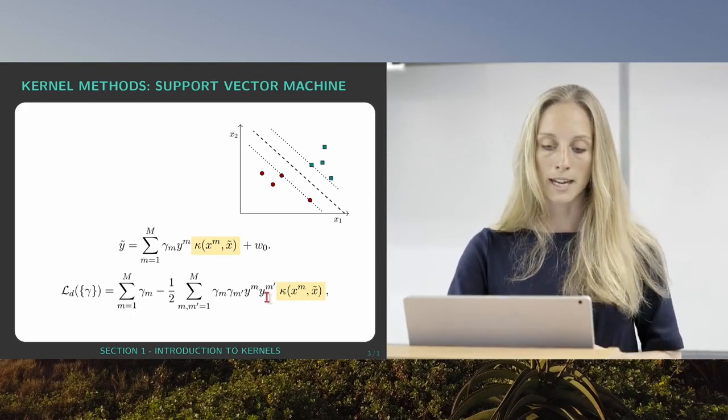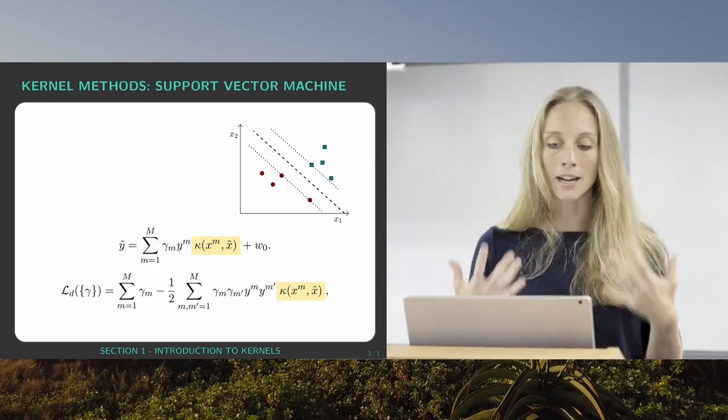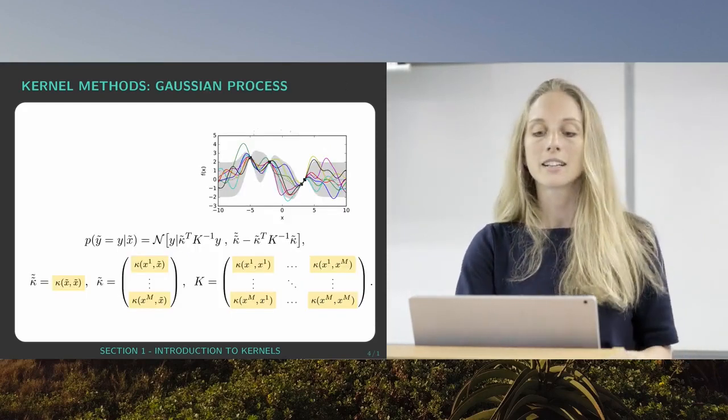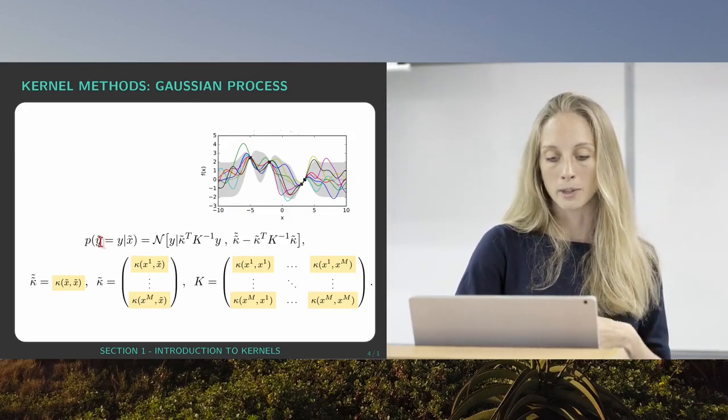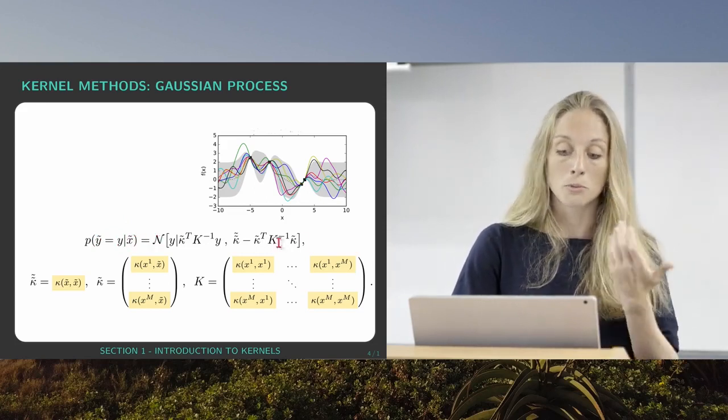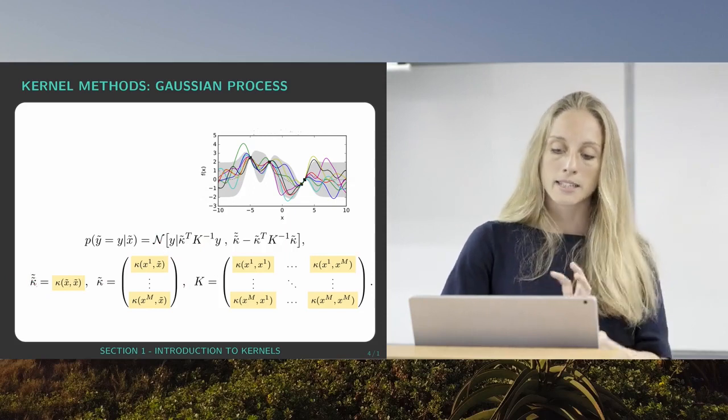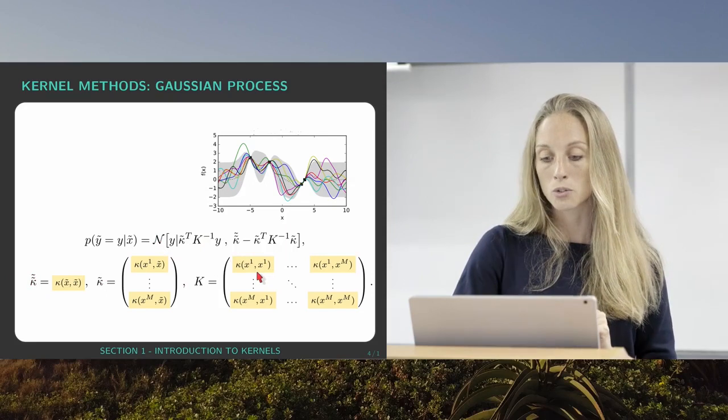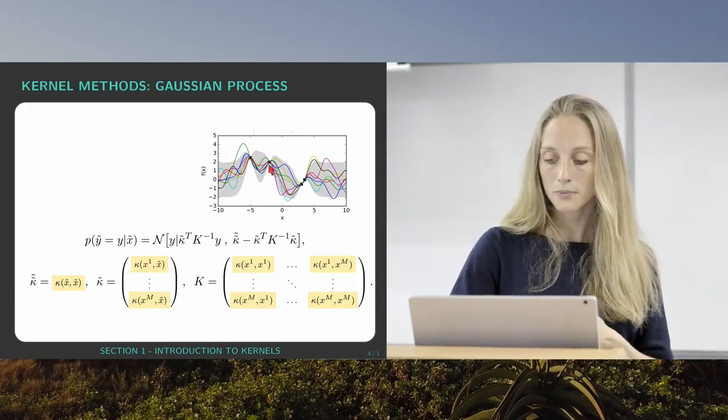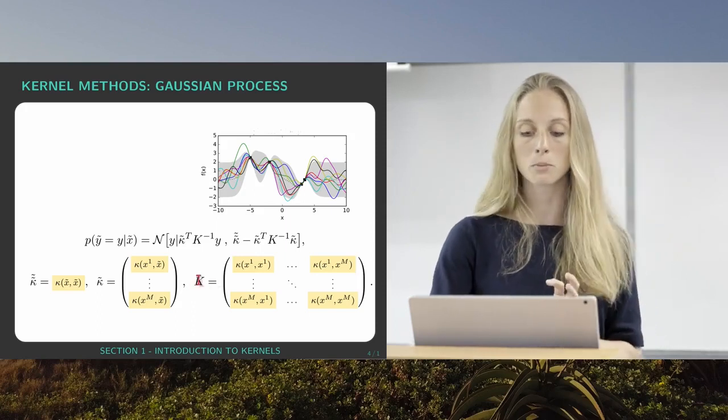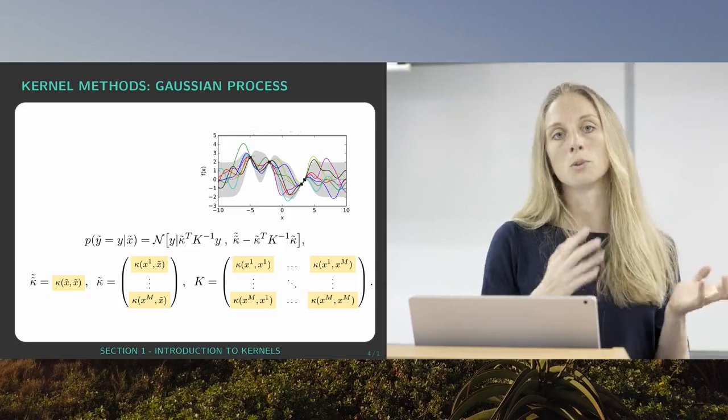Secondly Gaussian processes, again without going into the details, decide on a prediction y tilde or a certain class y given an input x tilde. And in this normal distribution we find a lot of tensors, so these are matrices and vectors and this is a scalar. And in these tensors are actually kernels, so pairwise similarity measures. And this kernel, which kernel you chose, has a very important influence on which functions are sampled in a Gaussian process. So how smooth the functions are. And this matrix K is actually a little bit interesting because we will talk about it later a bit more. It is a gram matrix called the kernel gram matrix which has the pairwise kernels of all your data points from x1 to xm as entries.